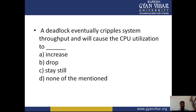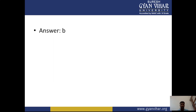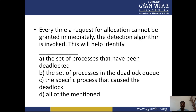MCQ 5: Deadlock eventually cripples system throughput and causes CPU utilization to — drop. Answer: B. MCQ 6: Every time a request for allocation cannot be granted immediately, the detection algorithm is invoked — this will help identify the set of processes that have been deadlocked. Answer: A.